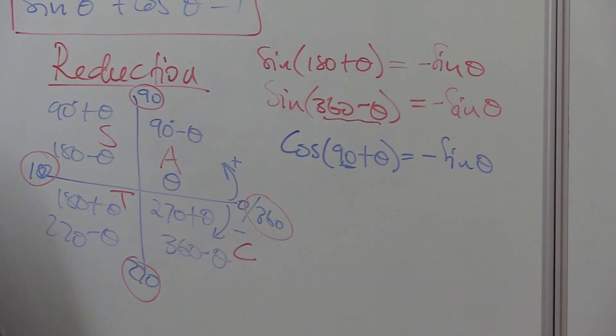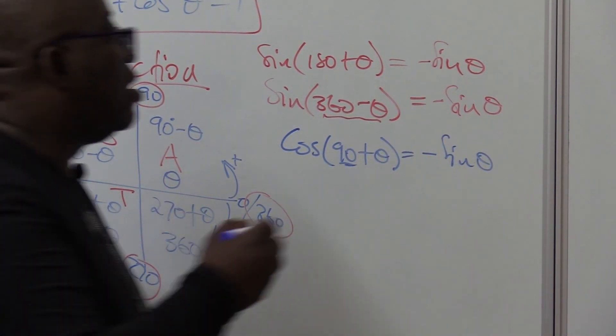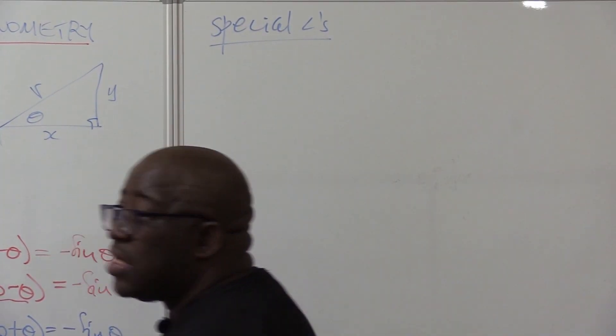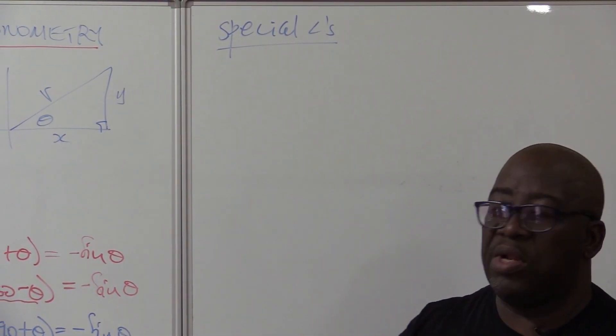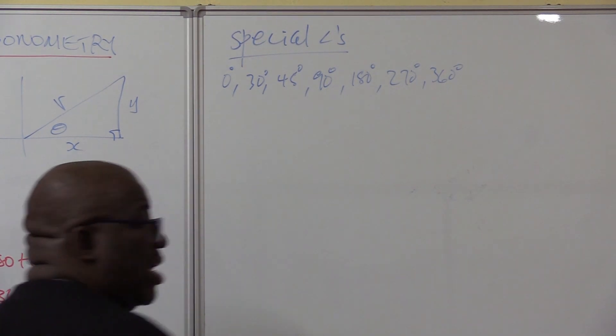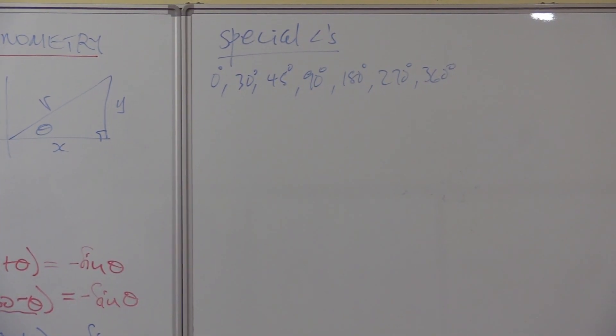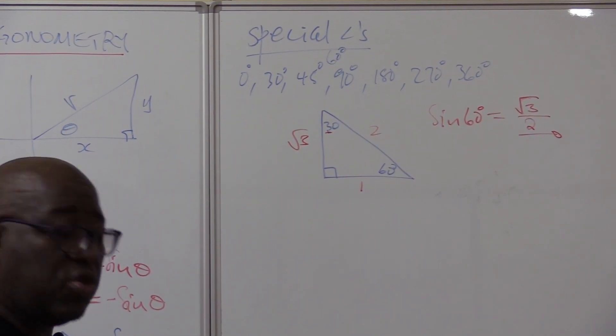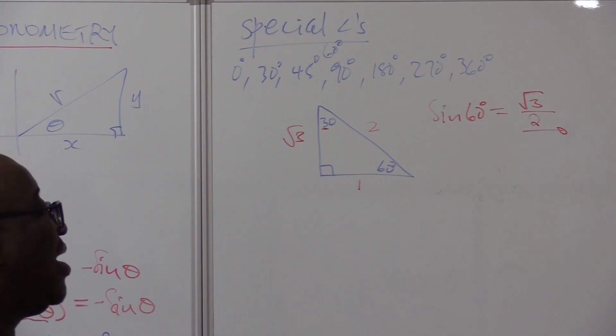After reduction formula, I want us to go straight to special angles. Special angles are those angles that you can find without using a calculator. When the question says do not use a calculator, you think of special angles.